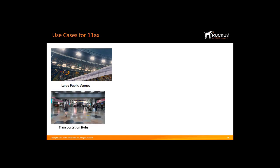Transportation hubs are also offering public Wi-Fi. Like stadiums, transportation hubs have high densities of people attempting to connect to the network simultaneously. However, these hubs face the unique challenge of transient devices that are not connecting to the Wi-Fi network but are still sending management traffic that congests it. The 11ax advancements with OFDMA and BSS coloring provide the tools to manage these dense environments.